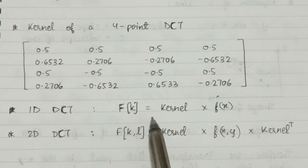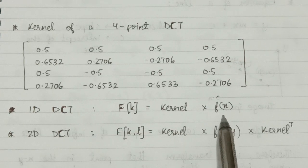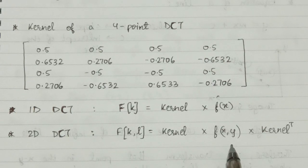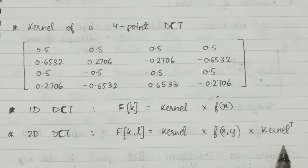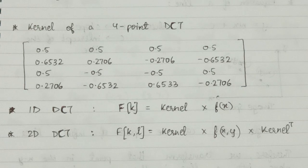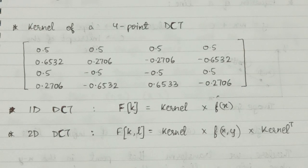The 1D DCT formula is F(k) = kernel × f(x), whereas the 2D DCT formula is F(k,l) = kernel × f(x,y) × kernel^T, where f(x) and f(x,y) are input images. Now let's move on to the questions.